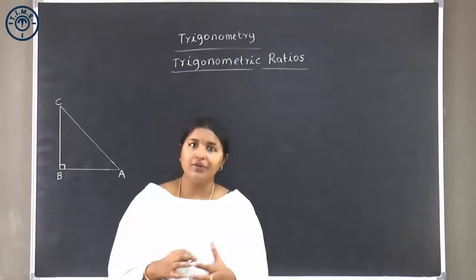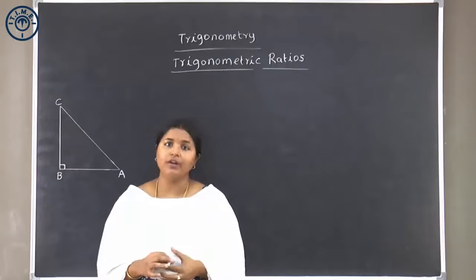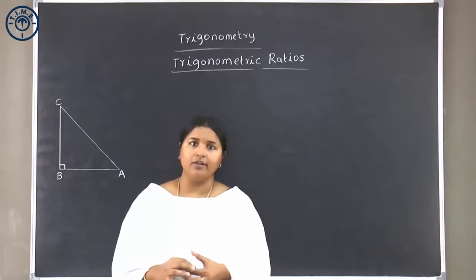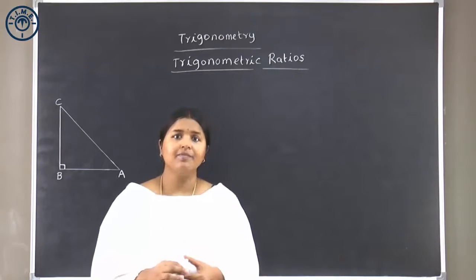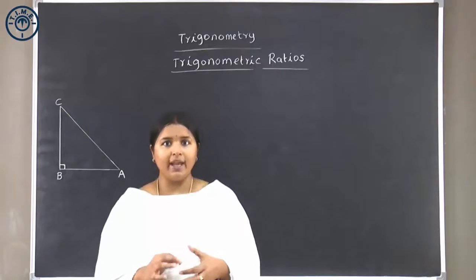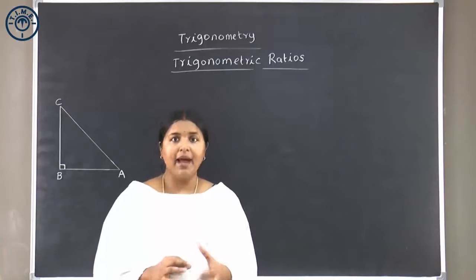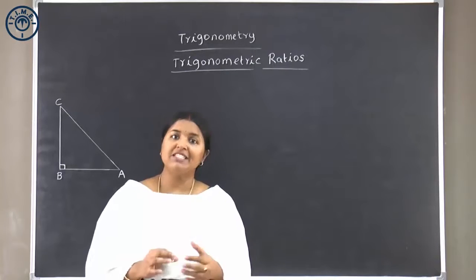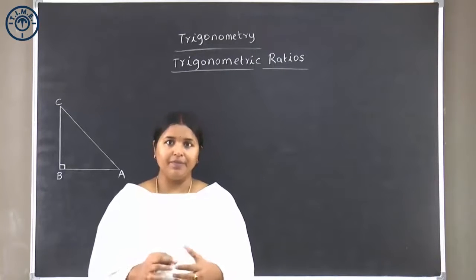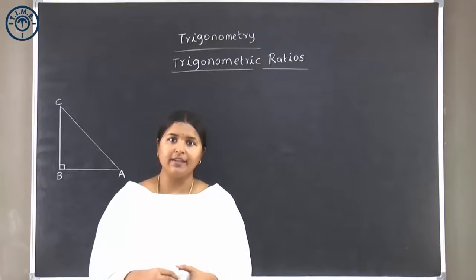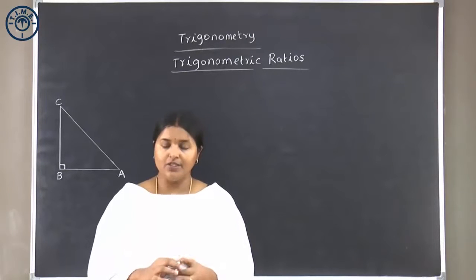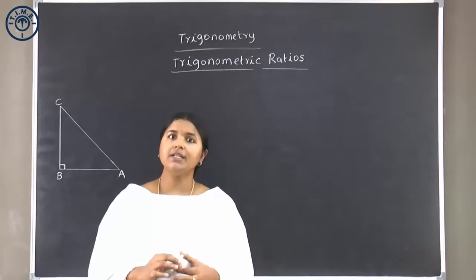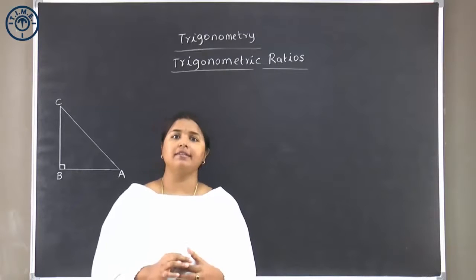Trigonometry comes from the Greek word trigonon. TRI means three, GONIA means angle, and MATRIN means measurement. All these three words put together, we get the word trigonometry. So trigonometry is about measurement of a triangle.